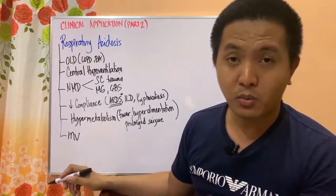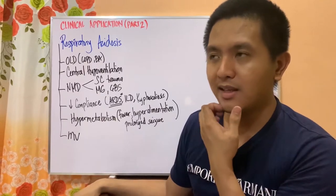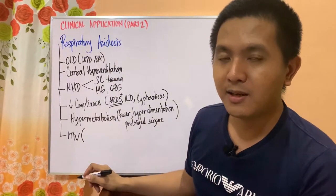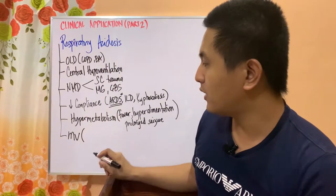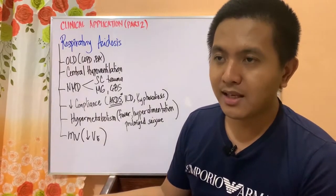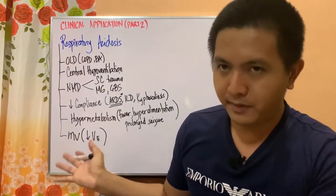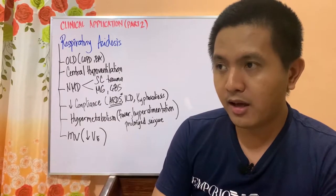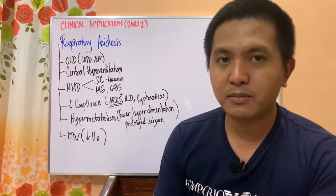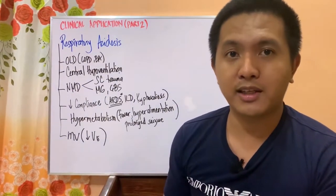Respiratory acidosis occurs in a mechanically ventilated patient when the mechanical ventilator settings result in a low minute ventilation. Any setting that gives the patient a low minute volume would cause respiratory acidosis. There are a lot of things that could cause respiratory acidosis — the list gets even longer — but let us identify the most common that you will encounter in your internship or clinical practice.